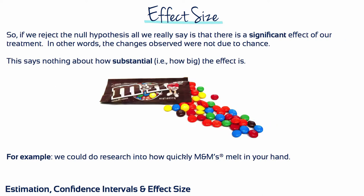So if we reject the null hypothesis, all we really see is that there is a significant effect of our treatment. In other words, the changes observed were not due to chance. This says nothing about how substantial or how big the effect is.